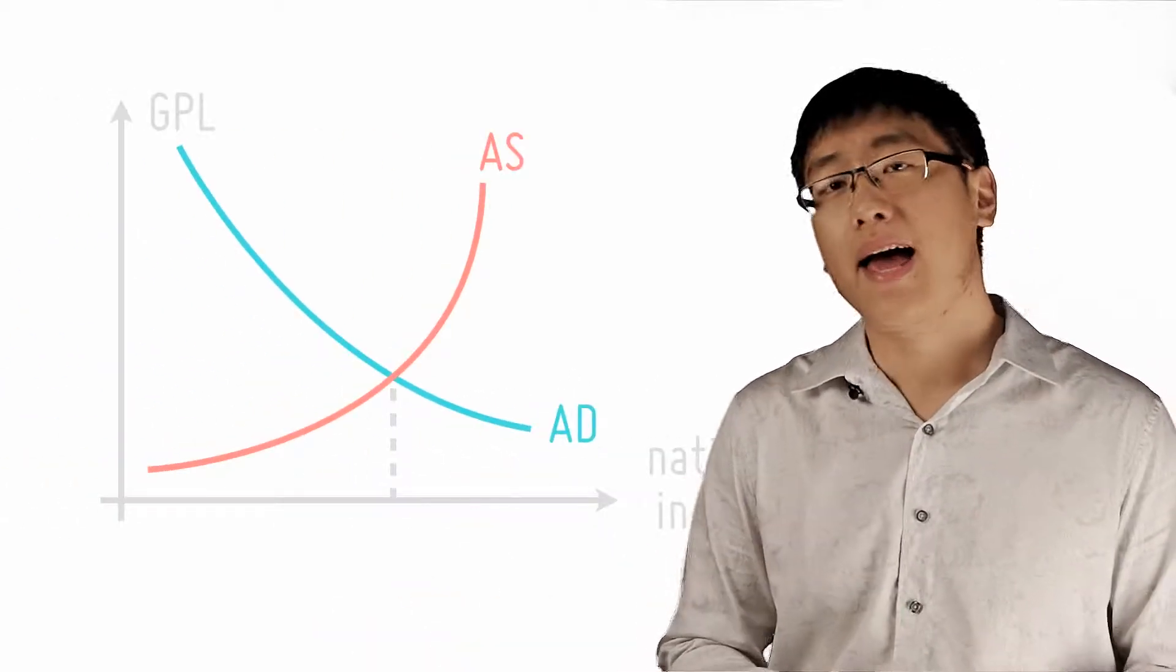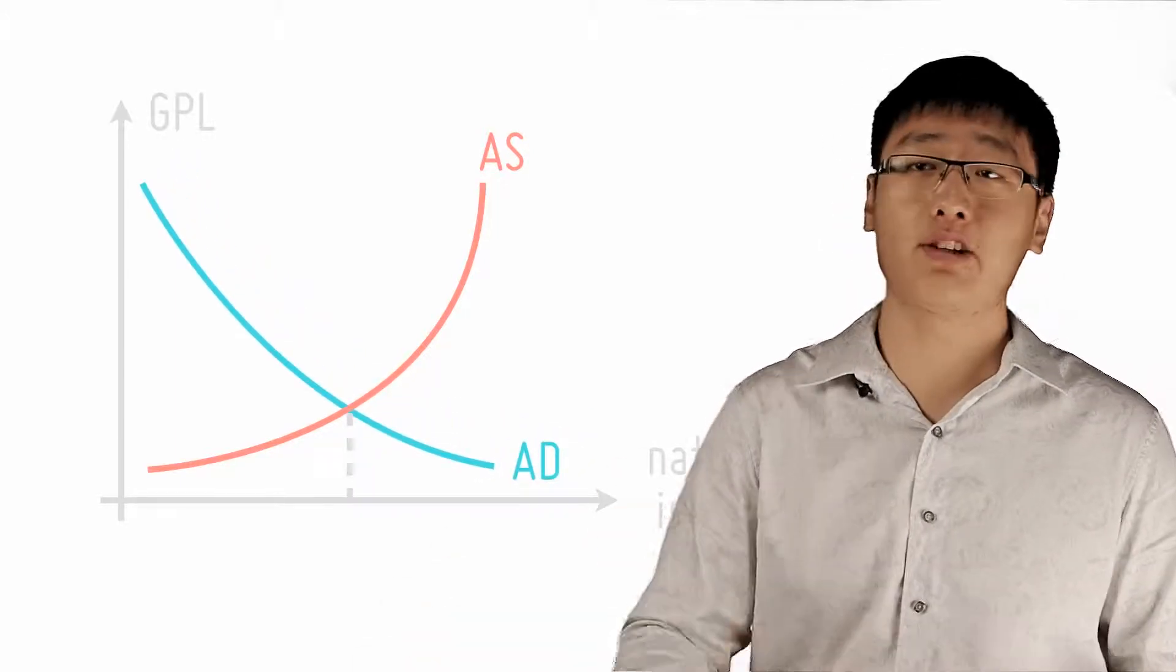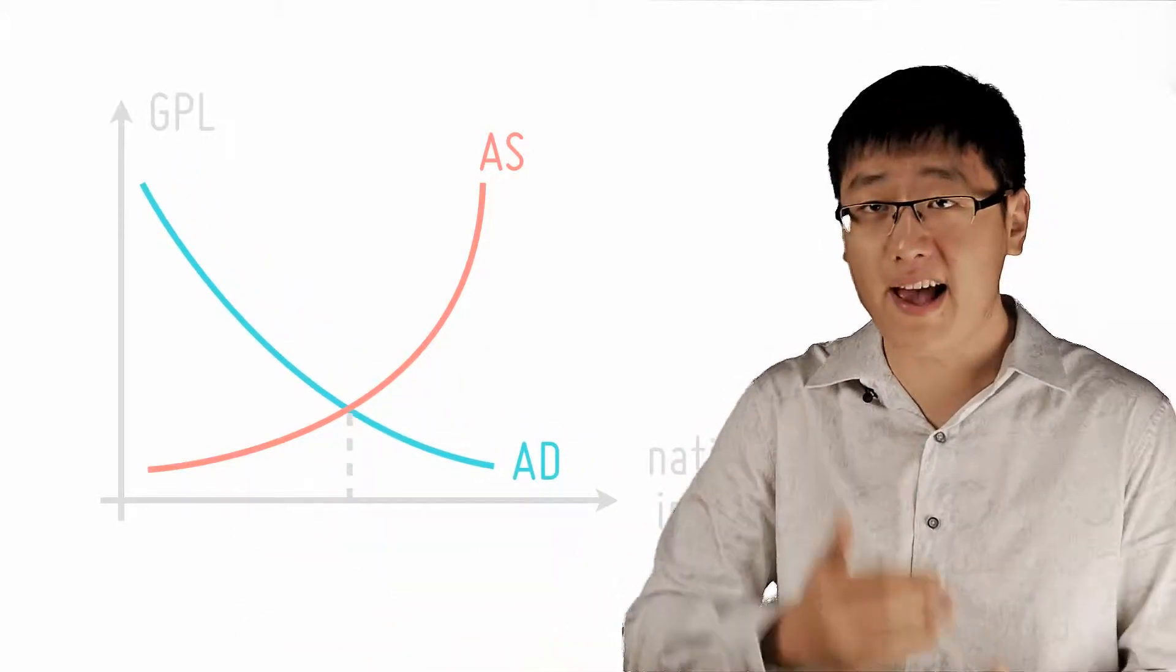Unemployment is pretty simple to explain. Unemployment basically follows national income. Hence if interest rate goes up, AD goes down, national income goes down even more due to the multiplier effect.